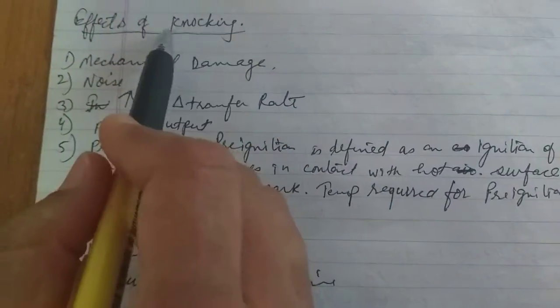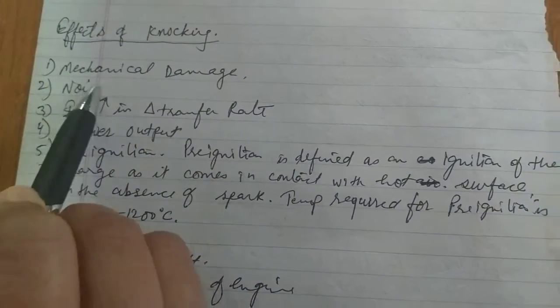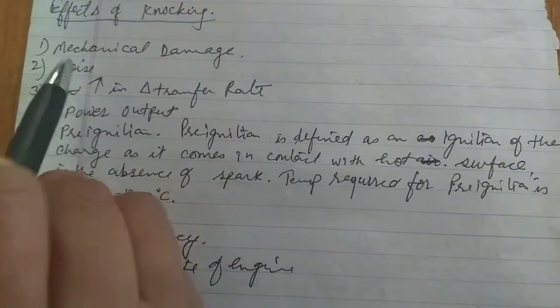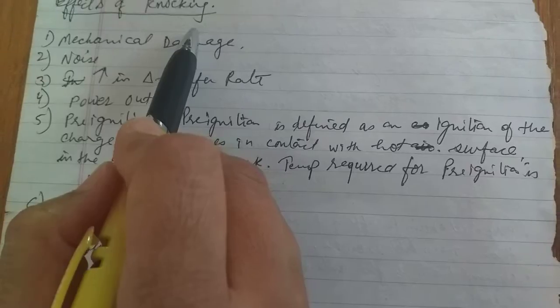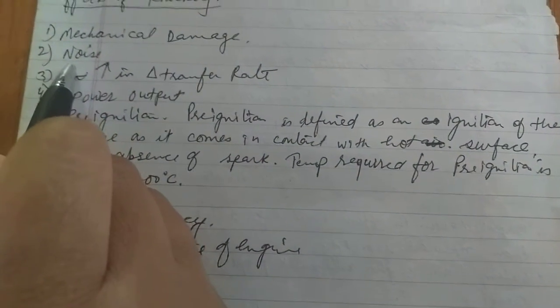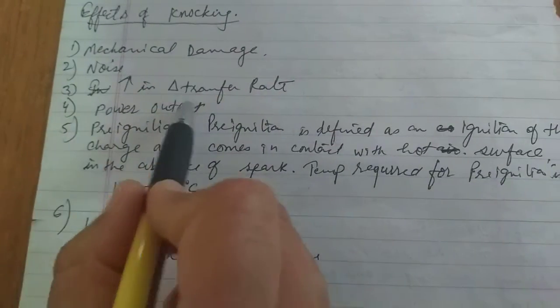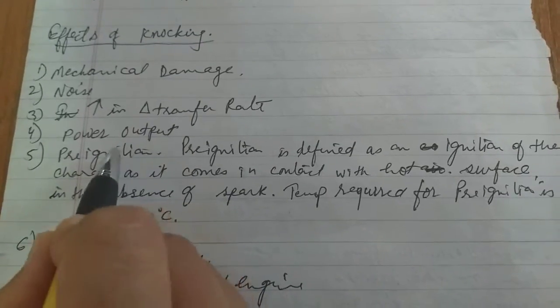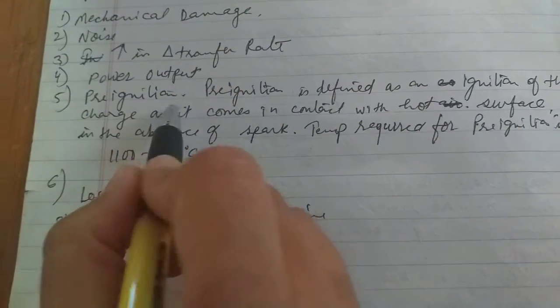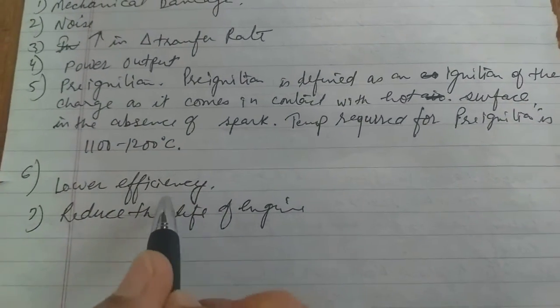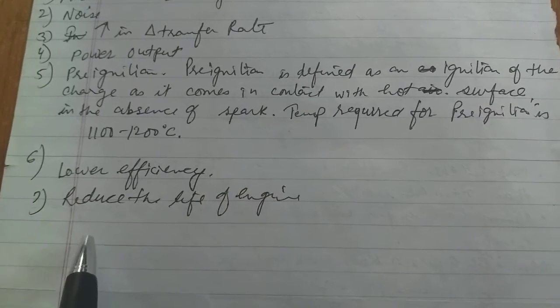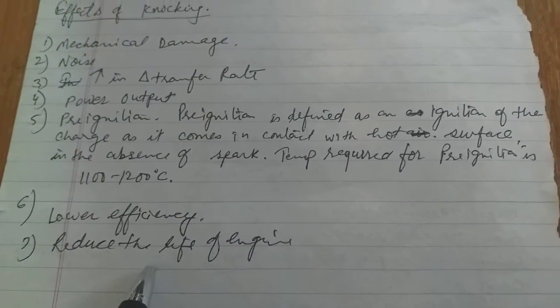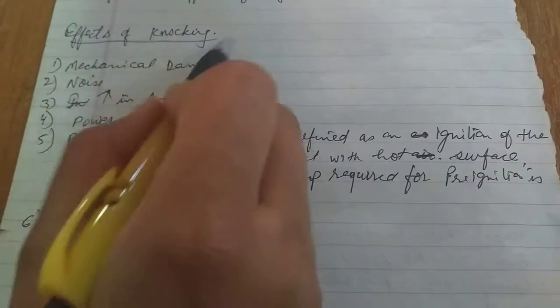Effect of knocking: What is the need to reduce this knocking? First, there is mechanical damage. If knocking is more, mechanical damage is also more. To reduce mechanical damage, knocking should be reduced. Knocking also causes noise pollution, increases heat transfer rate, gives lower output of power, and causes pre-ignition. If knocking is there, efficiency of engine is low. Lower efficiency is produced and reduced life span of engine. These are the reasons we have to remove or reduce this knocking.